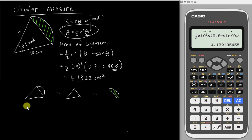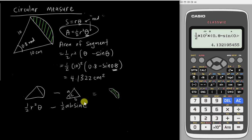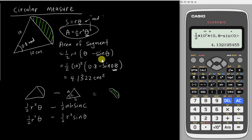The formula for area of sector is ½r²θ. The formula for area of triangle is ½ab sinC, where a and b are two sides and C is the angle between them. In this case, a and b are both equal to r, so it becomes ½ × r² × sinθ. If you factorize ½r² from both terms, you can see how the segment formula ½r²(θ − sinθ) is derived.